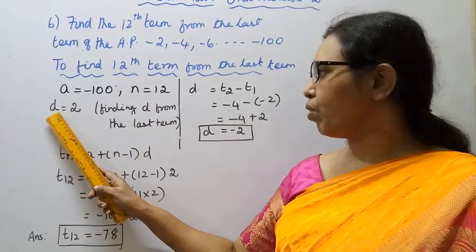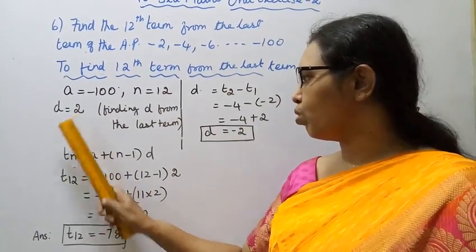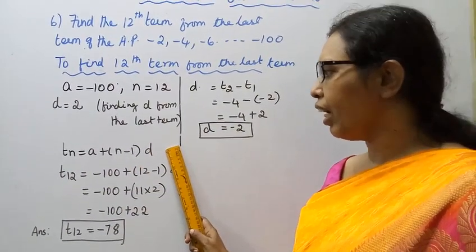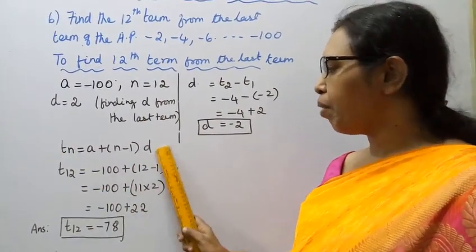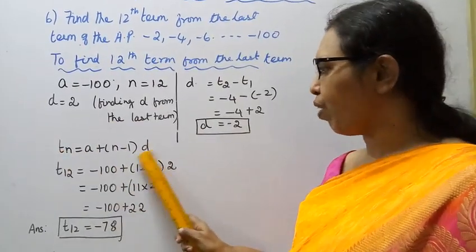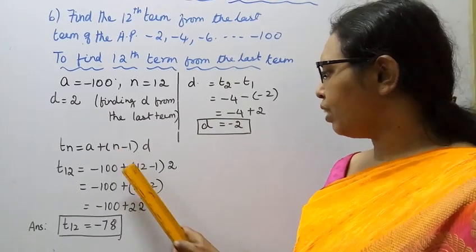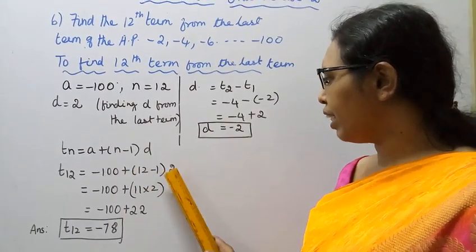Using the nth term formula for this approach: t12 = a + (n-1)d. Where a = -100, n = 12, so (12-1) = 11, and d = 2.